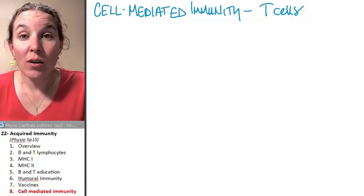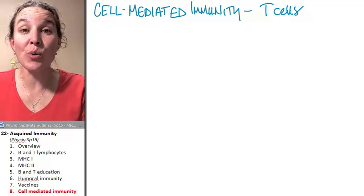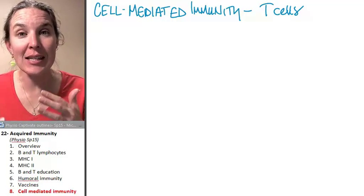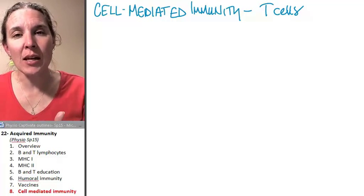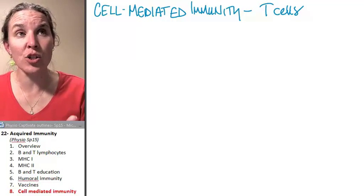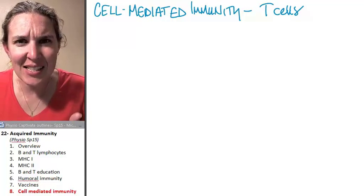The humoral immune response responded to bad guys in the environment outside of a cell. Cell mediated immunity responds to threats or dangers inside the cell.